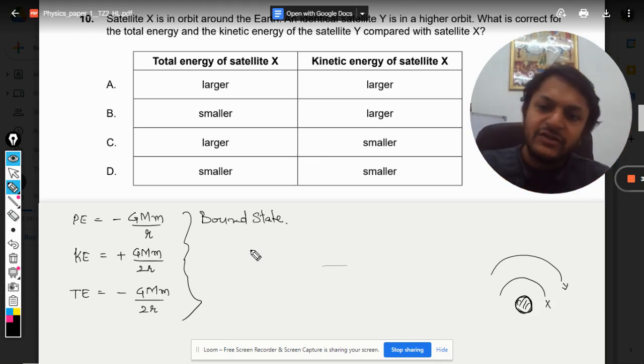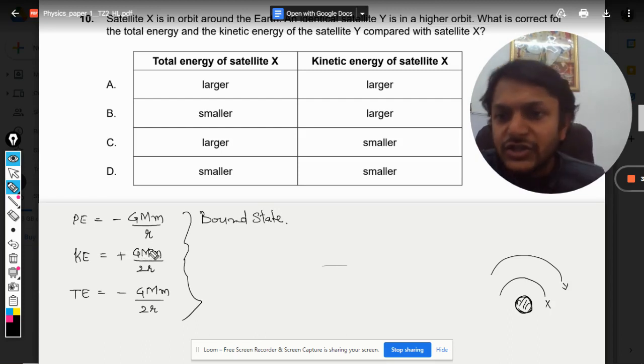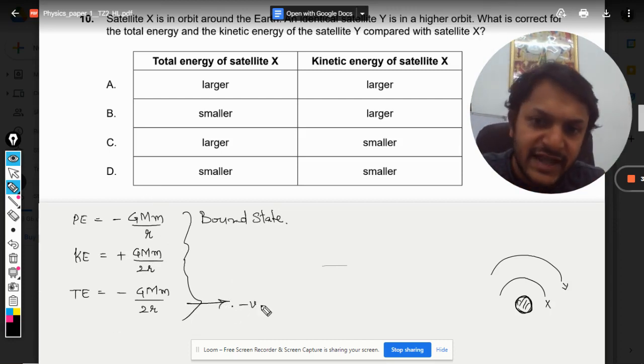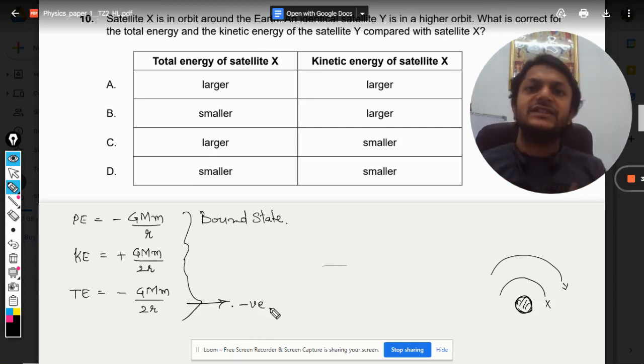Whenever the energies are of this kind, now we want to comment on the total energy and the kinetic energy. This is the total energy. First of all, the total energy is negative. So as the distance increases, the magnitude of total energy decreases, but because it is negative, we will say that it is increasing.